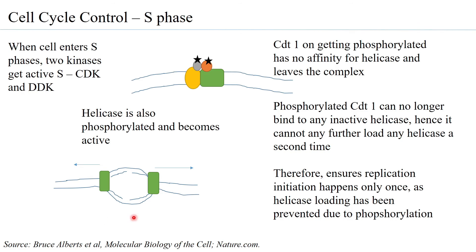So two things have happened: first, the helicase has become active because it was phosphorylated by S-CDK and DDK; second, CDT1 has been made inactive, preventing re-loading of the helicase and therefore preventing another initiation of replication in that cycle.